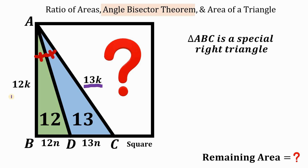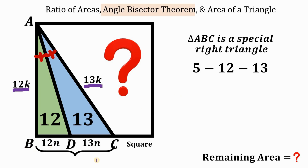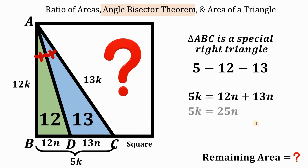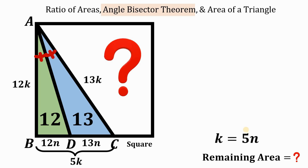This reminds us of a 5-12-13 right triangle, so BC = 5k. Since BC = 12n + 13n = 25n, we get 5k = 25n, meaning k = 5n. Using the green triangle with area 12 square units: one-half times base 12n times height 12k equals 12, which simplifies to 6kn = 1.